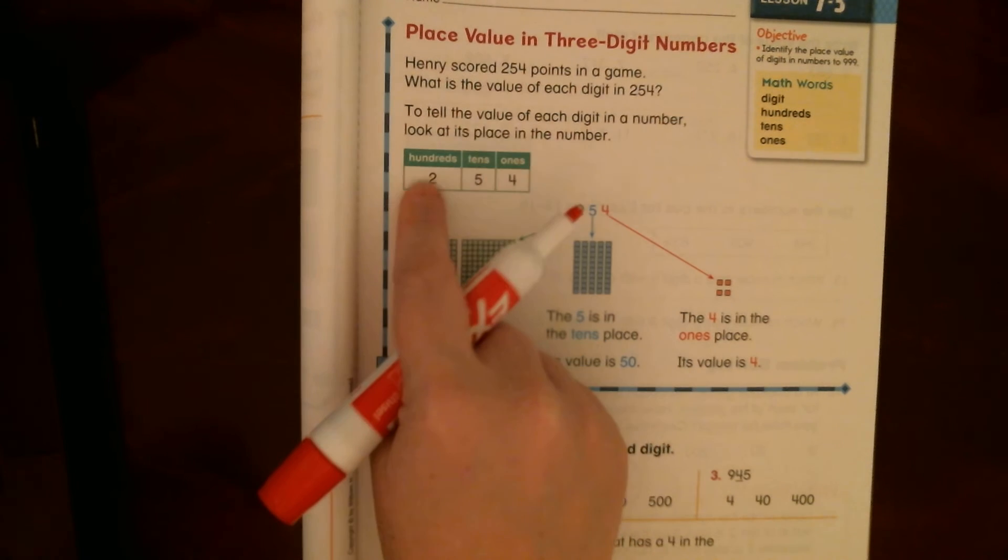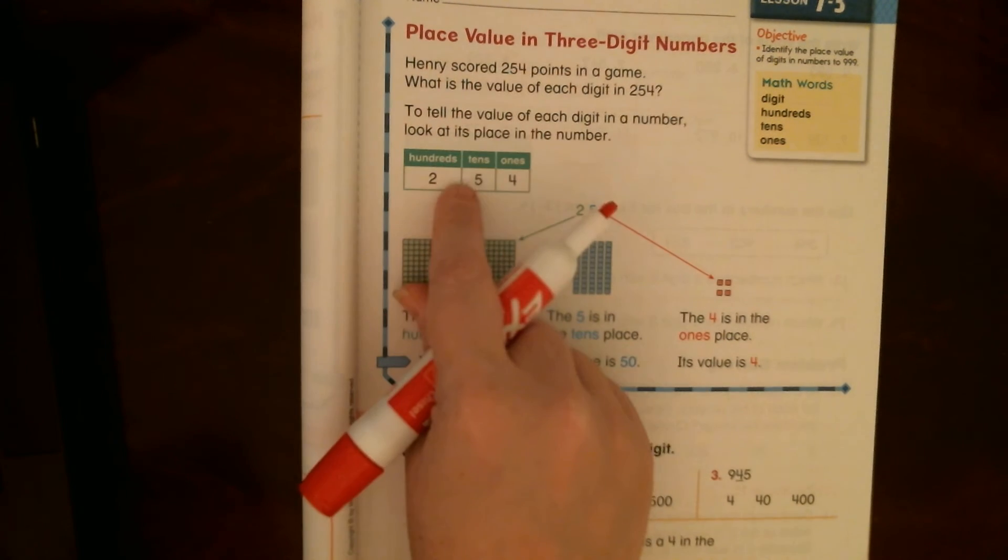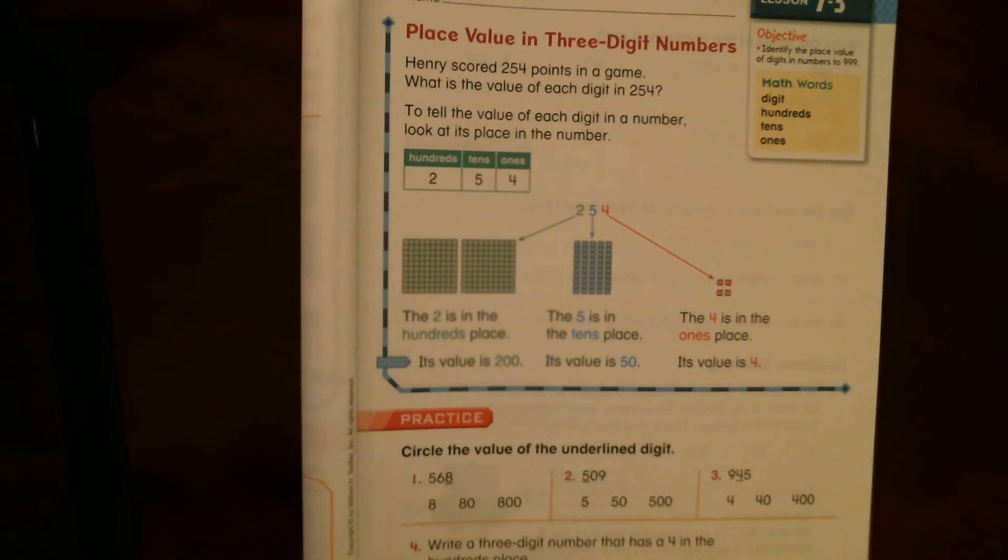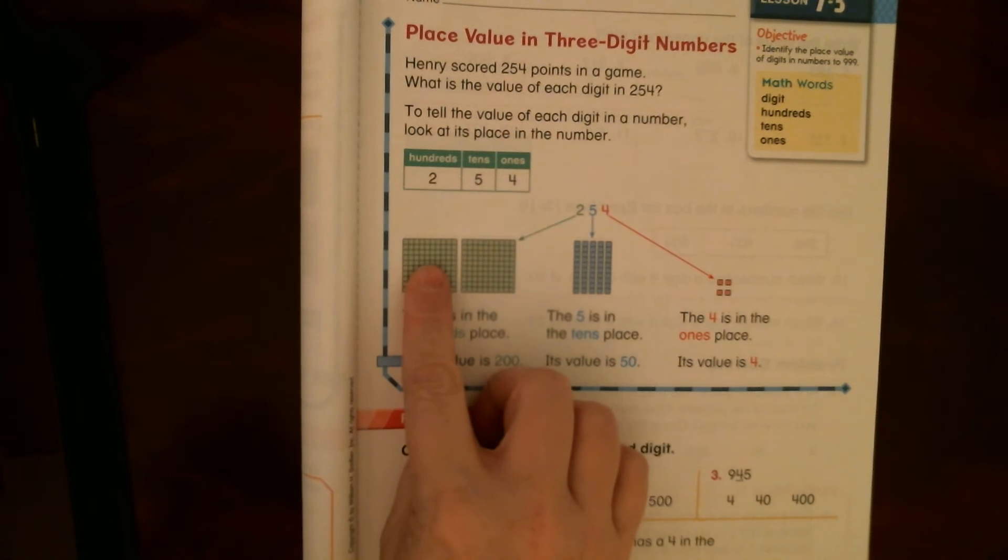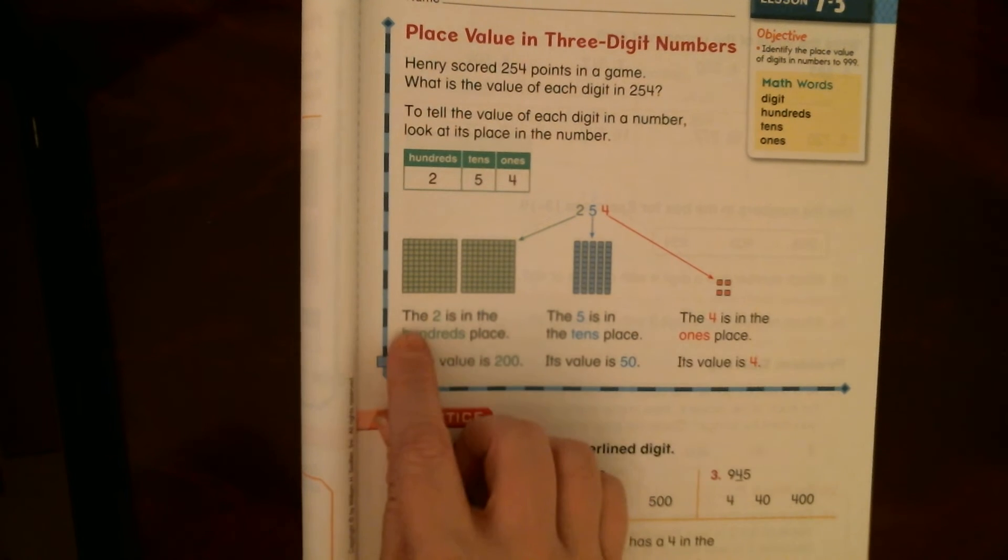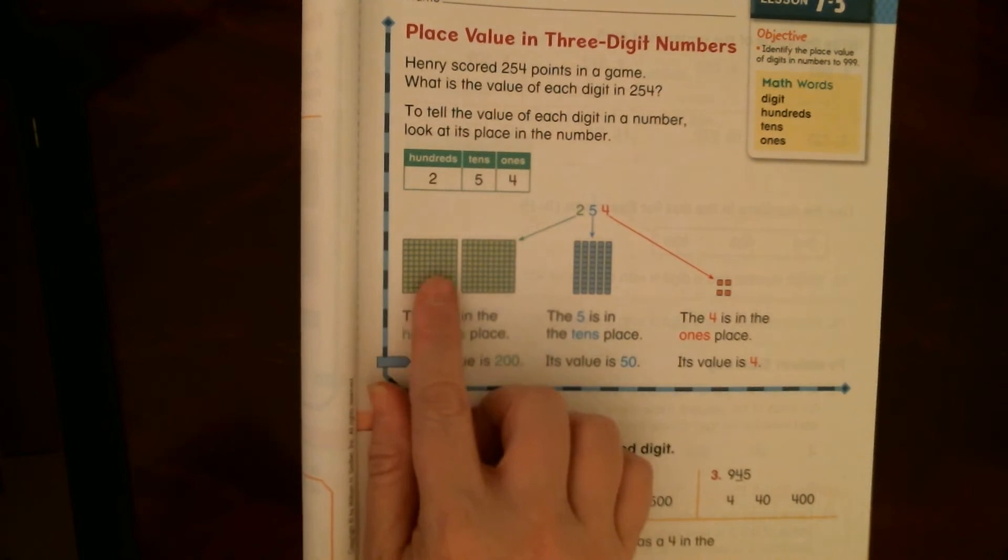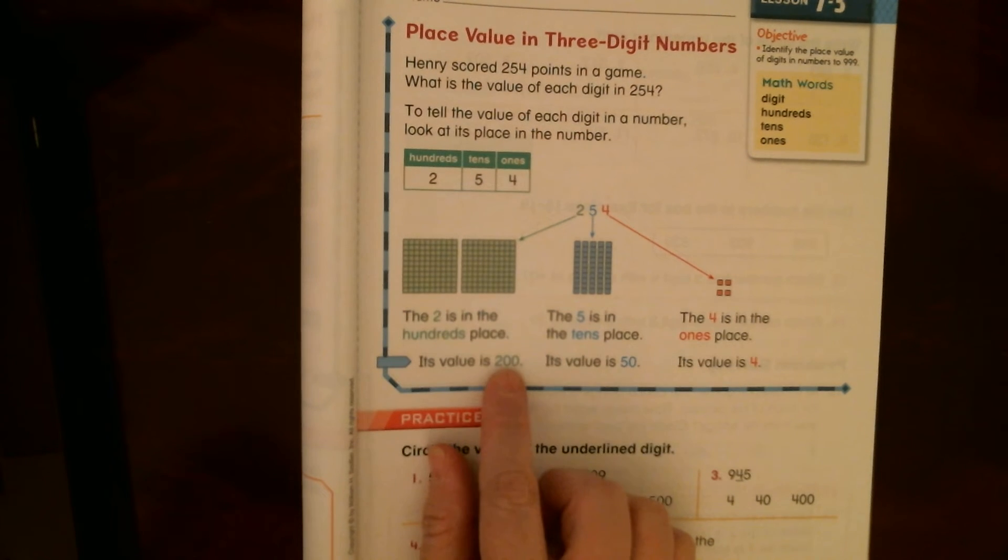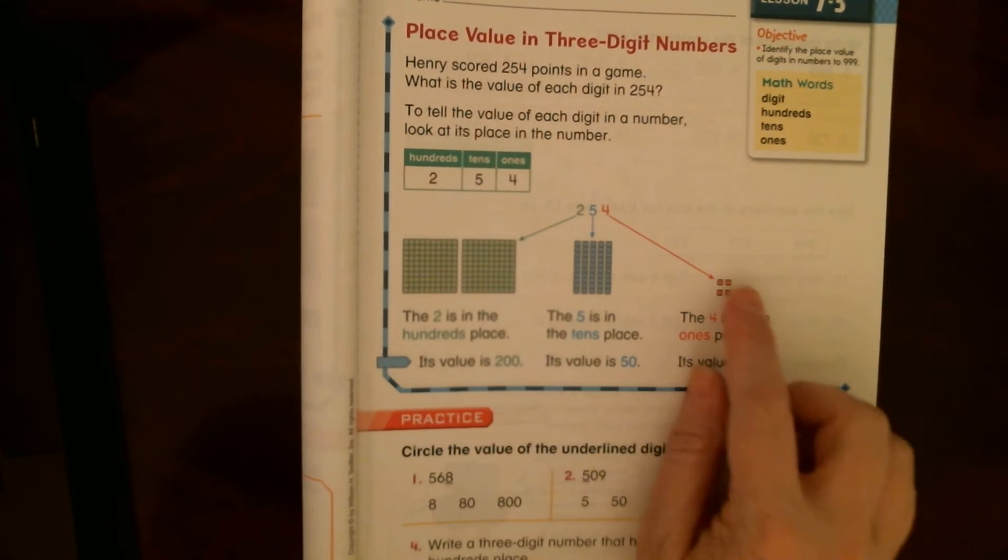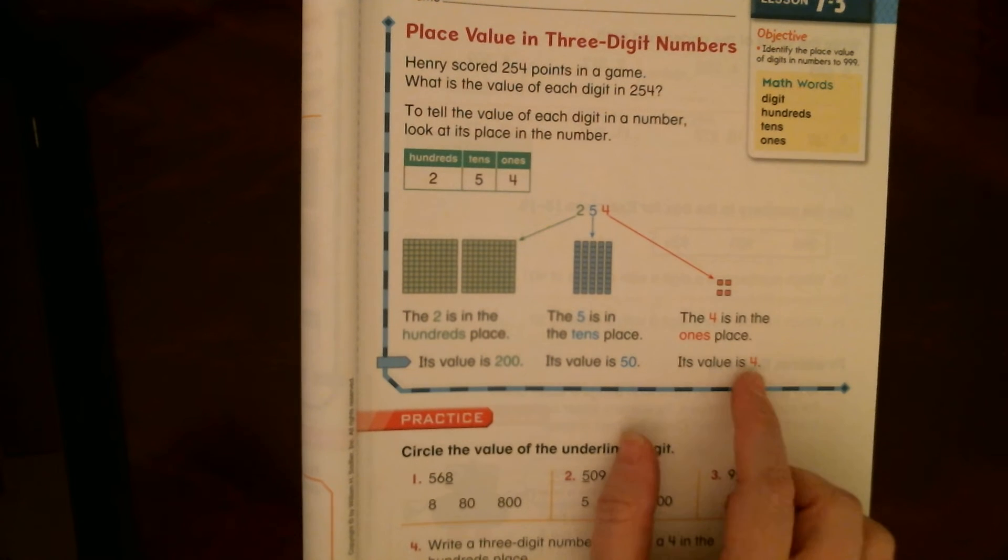They wrote the two because it's in the hundreds place. The five is in the tens place. The four is in the ones place. And we know that we represent 200 with these 200 flats. Five tens, four ones. The two is in the hundreds place. Its value is 200. It's worth that two stands for 200. The five is in the tens place. Five tens. Its value is 50. Five tens is worth 50. Five tens are worth 50. And then the four is in the ones place. So it's worth four.